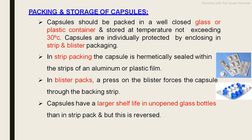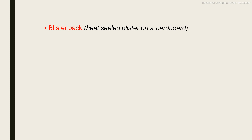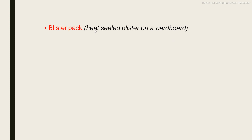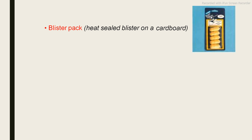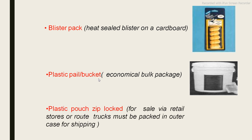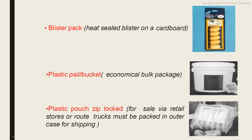The shelf life, indicated by the expiry period on the packaging, may be up to two or three years. Glass bottles provide a longer shelf life compared to blister or strip packaging. Other packaging options for hard gelatin capsules include heat-shield blister on cardboard, plastic pill pockets, and plastic ziplock pouches.